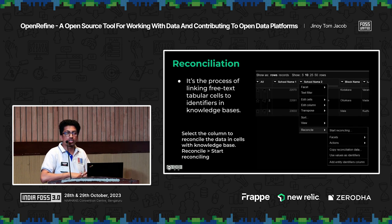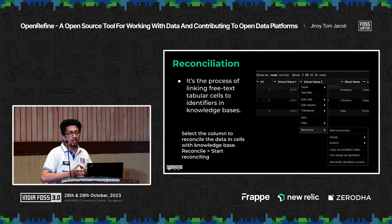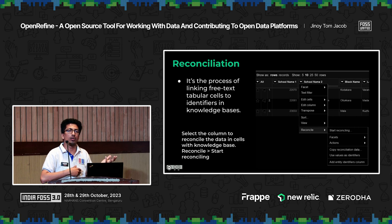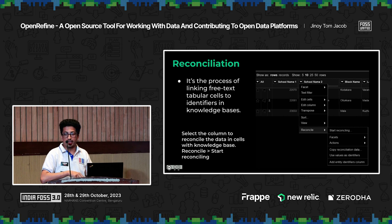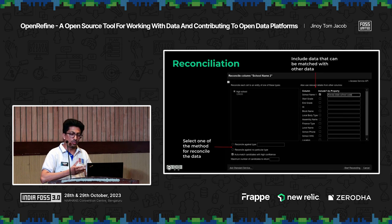The reconciliation process in OpenRefine lets you connect with external databases like Wikidata, Wikimedia Commons, or any Wikibase instance. You can match that information — the information already on that platform — with your own data. You can use this tool for matching, creating new cells, or enriching that information, and then connect it. In this project, I connected my information with Wikidata.